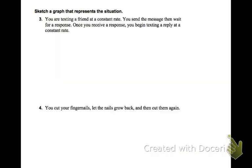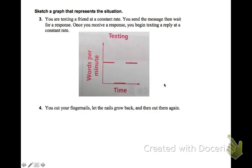If you were to sketch the graphs, you are told that you're texting a friend at a constant rate. You send the message. Then you wait for a response. Once you receive a response, you begin texting a reply at a constant rate. So that constant rate is telling you you're going to have a straight line, but here's something that's going to look a little bit different to us, because when we're waiting for the reply, what's happening? We're not texting. So our graph is a constant rate. It's not increasing. It's not decreasing. So we're texting. Stop. Wait. Get a reply. Text. And it's counting it in words per minute.